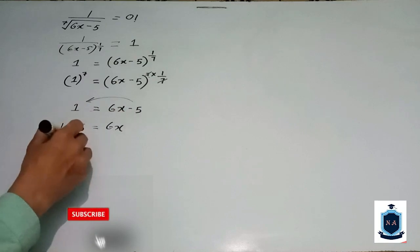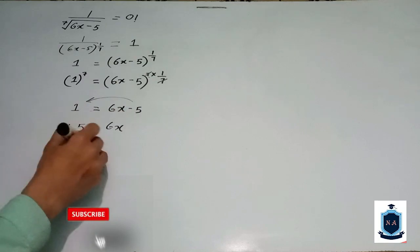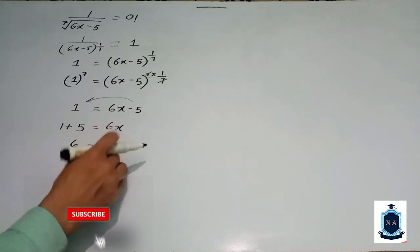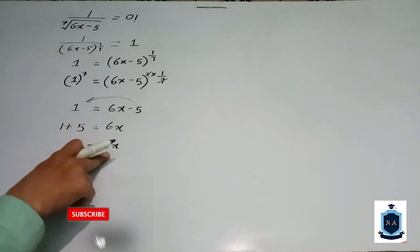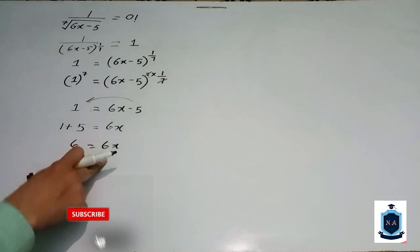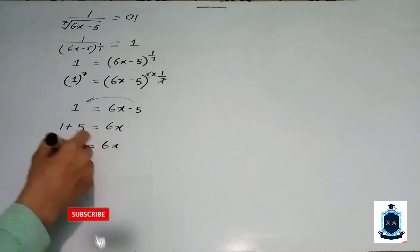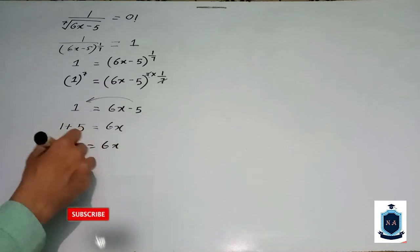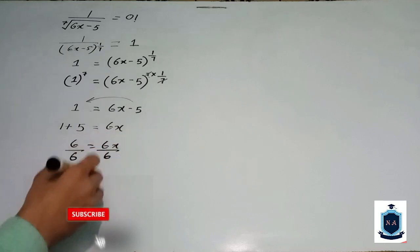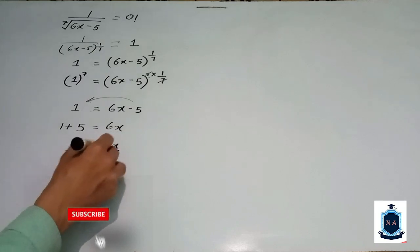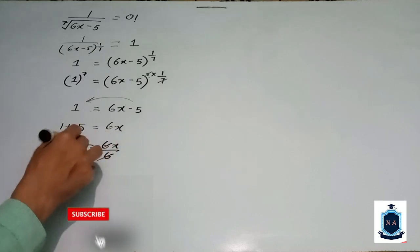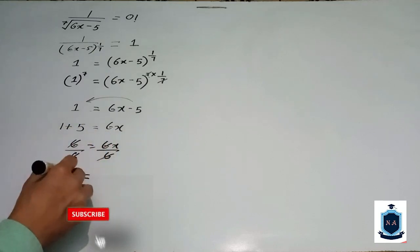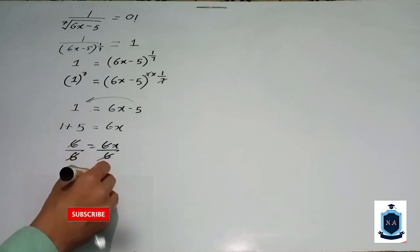Here you can see that six x equals six. If you want to cancel the six, we divide both sides by six. Six divided by six is cancelled, and the final answer is x equals one.